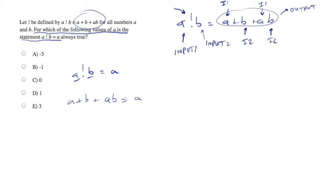And it's saying, for what values of A is this always true? So let's continue solving this equation. And we notice that there's an A on both sides, so we can simply cancel that out. And what we're left with is B plus AB equals 0.